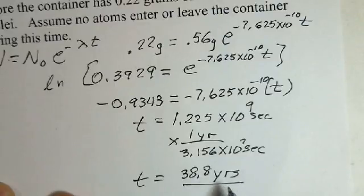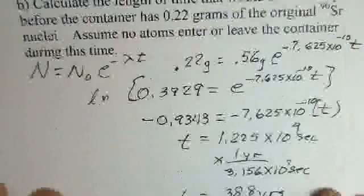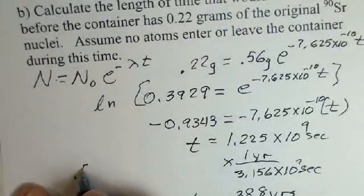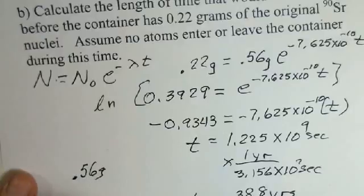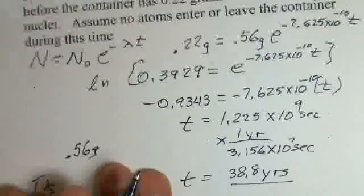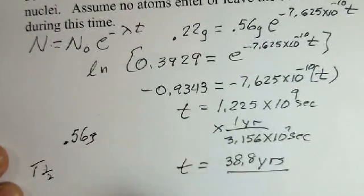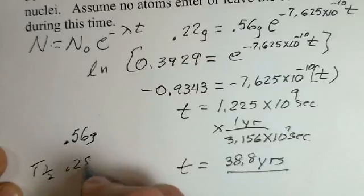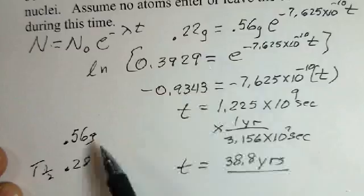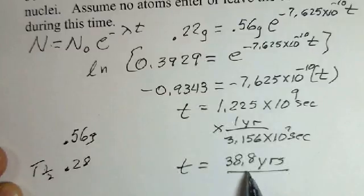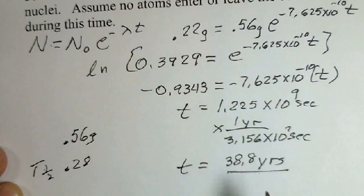Is that a reasonable number? Well, we started with 0.56 grams. In one half-life, we would be down to 0.28. We're going to a lower number here, 0.22 grams. So we should have a time longer than the half-life. The half-life is 28.8 years. And we are longer than that.